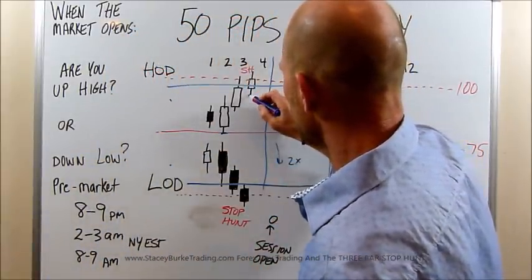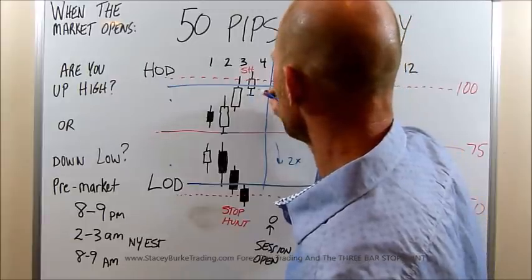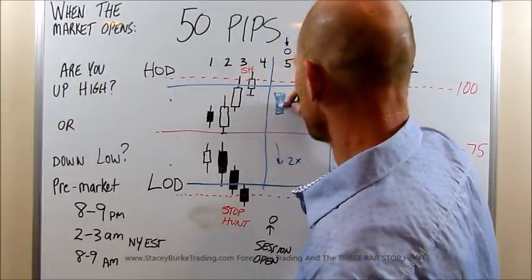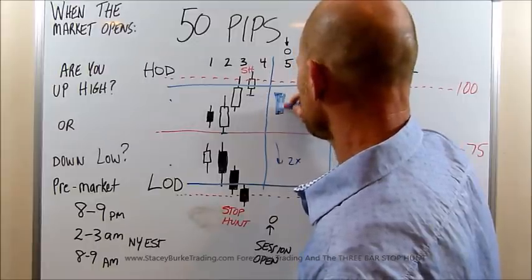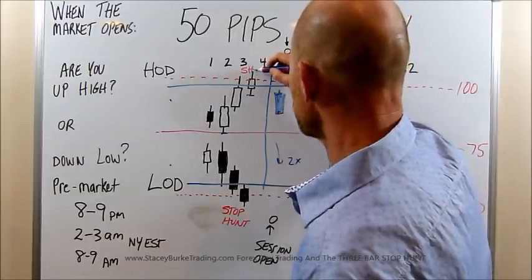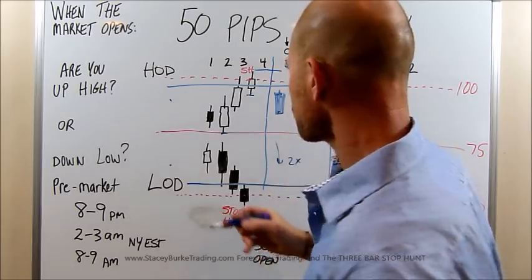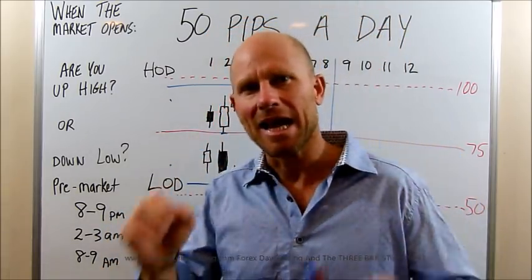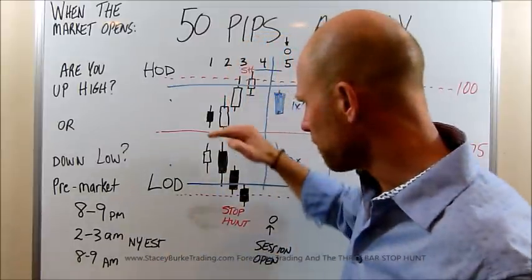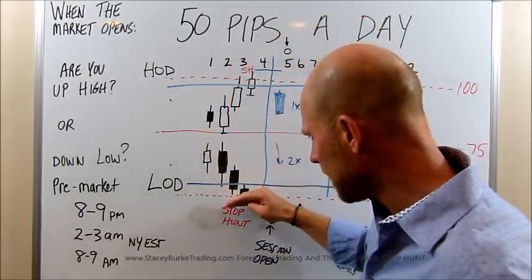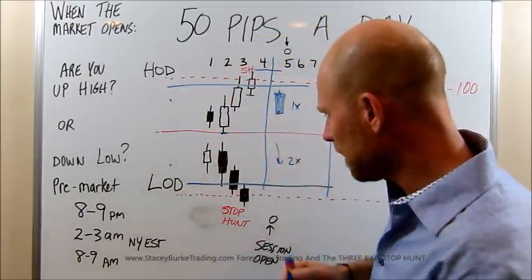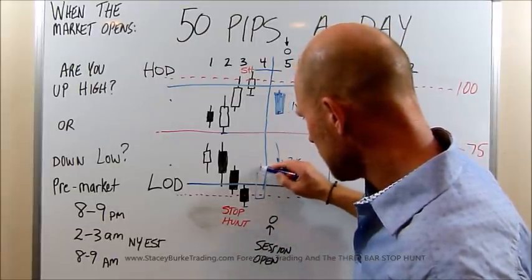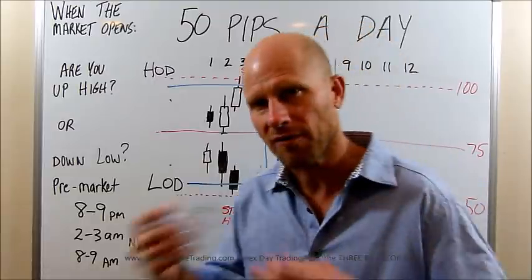Traders can either trade the break of this candle or the close of this candle if it closes as an engulfment candle. Stop goes above the high of the day. This applies specifically at the opening of the markets, whether the market goes one-two-three down and shifts. Traders can put their stop below there, position themselves at the close of that candle — whatever they want.